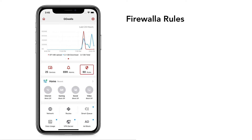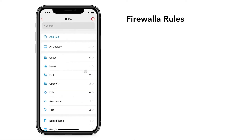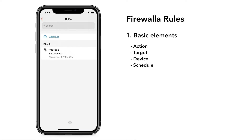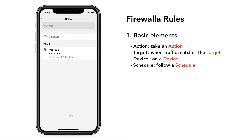Firewall rules allow you to define how you want to control network access for one or more devices. A rule has four basic elements: take an action, when traffic matches the targets on the device, and follow a schedule.